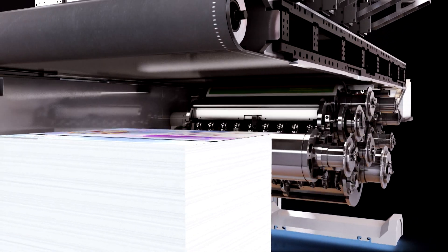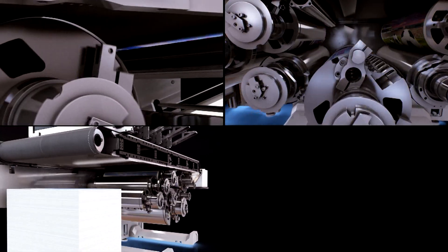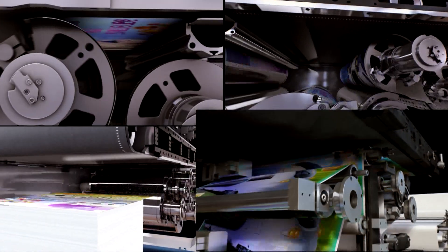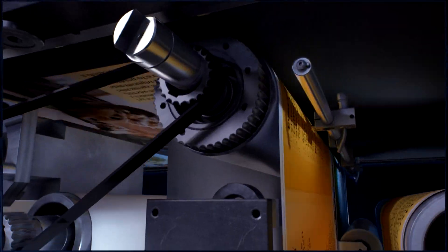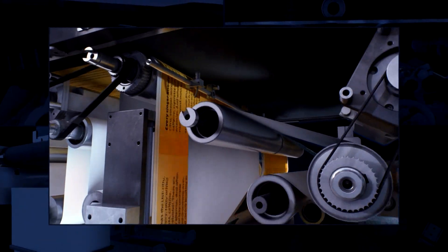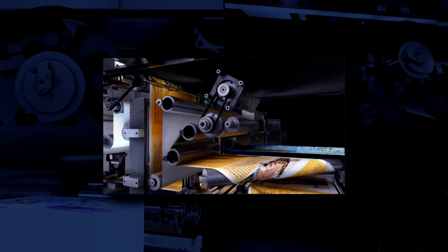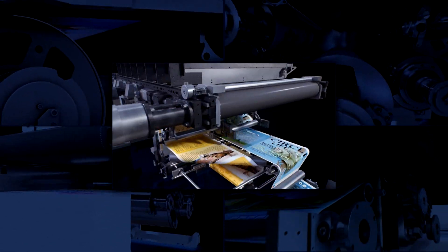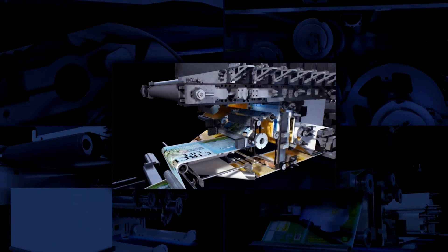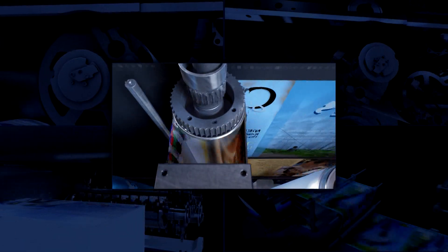Nano-Ink images can be transferred to sheets or webs of ordinary coated or uncoated paper or plastic packaging films without any kind of pre-treatment. Since Nano-Ink images are already dry, there's no need for any kind of post drying. So two-sided printing becomes simple and printed goods can be immediately processed right out of the press.